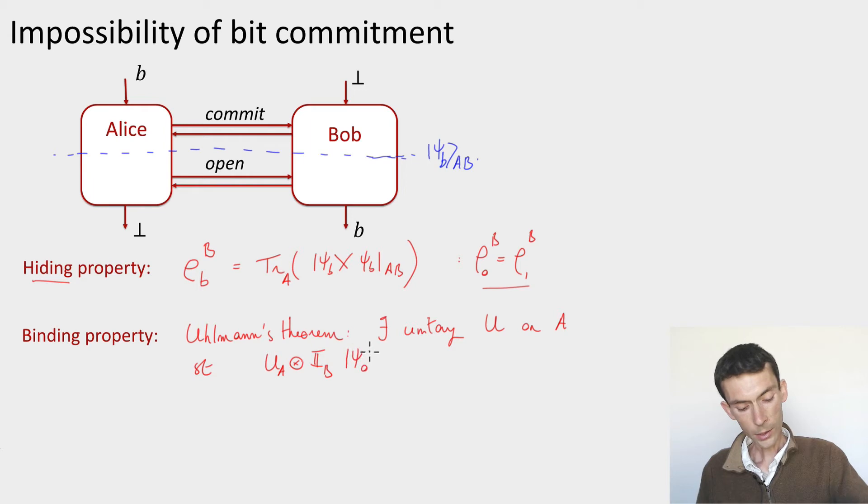And this is a unitary which acts at this stage of the protocol here, which means that in between the commit and open phase, it's possible for Alice to apply a unitary that maps the state that corresponds to a commitment of 0 to the state that corresponds to a commitment of 1, meaning that she can change her mind between these two phases.